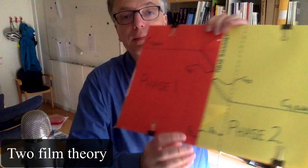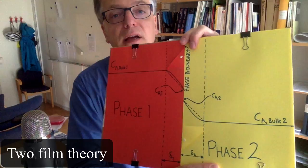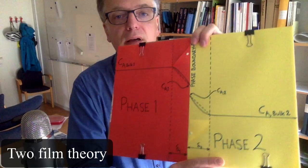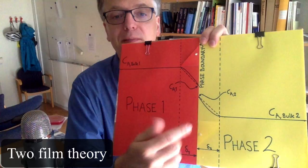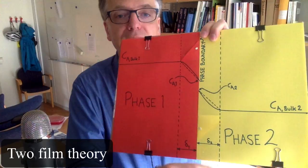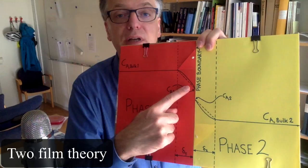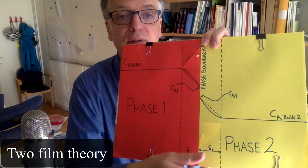The two-film theory doesn't care about that complexity. It simplifies matter and says that everything is constant up to a certain exact point, and then what happens occurs within a certain film of a certain thickness in each of the two phases. Hence the name: you have a film in which the concentration changes in phase one, and a film in phase two where the concentration changes.